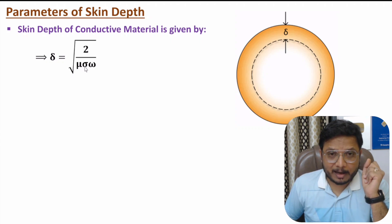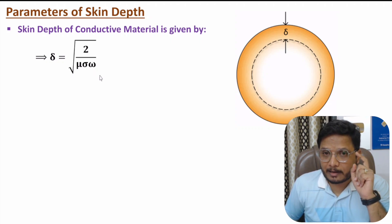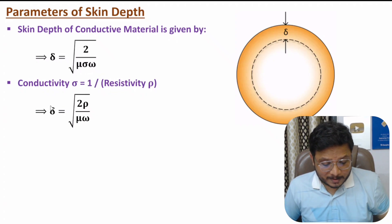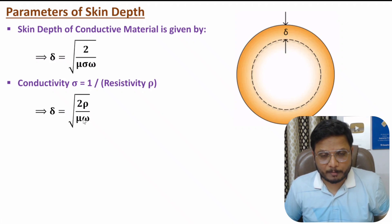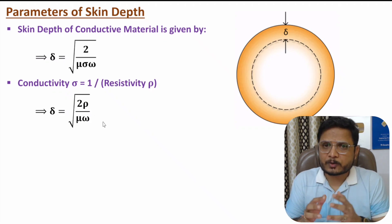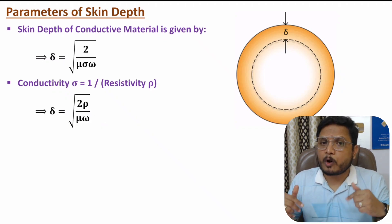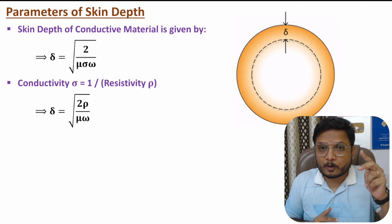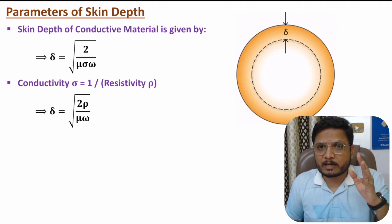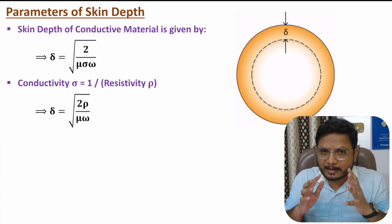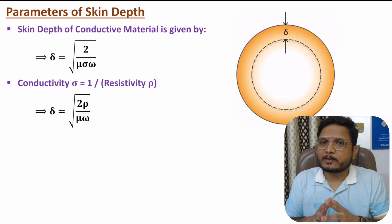Since sigma is the reciprocal of resistivity rho (sigma = 1/rho), substituting gives skin depth as delta = √(2ρ / μω). These are very essential equations that you can use to solve problems in competitive examinations like GATE, BARC, ISRO, and UGC NET, where many questions are based on these equations.